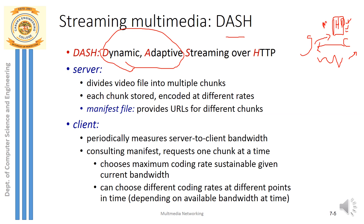In DASH streaming, the client requests a special file called a manifest file. This manifest file provides a list of URLs — links to the same video file in different quality versions: HD, medium, and low. The client can select any version depending on the available bandwidth and network congestion.